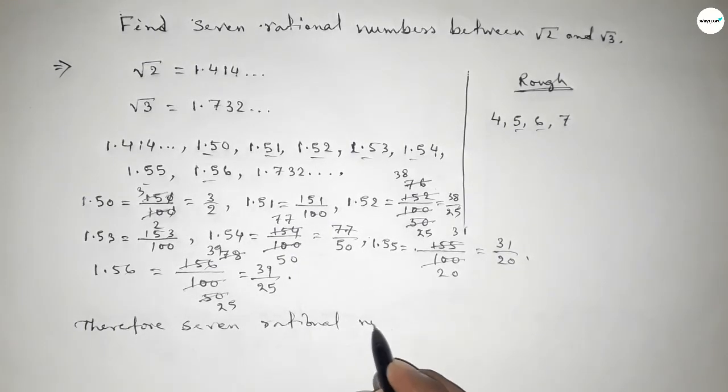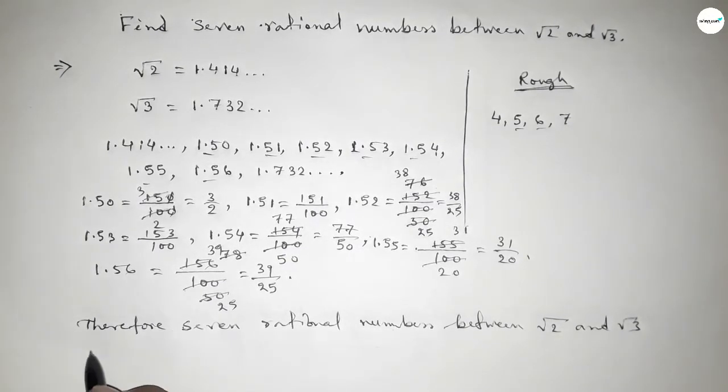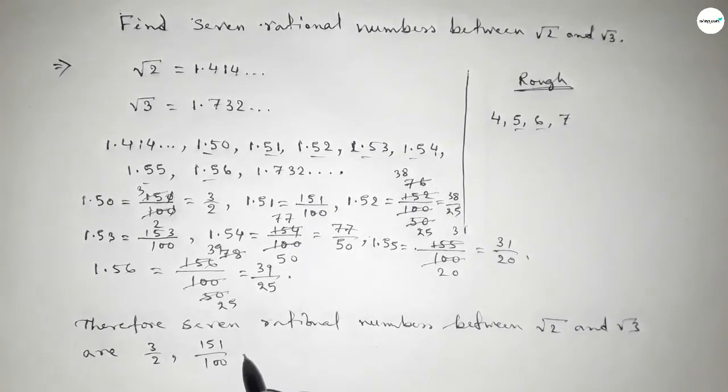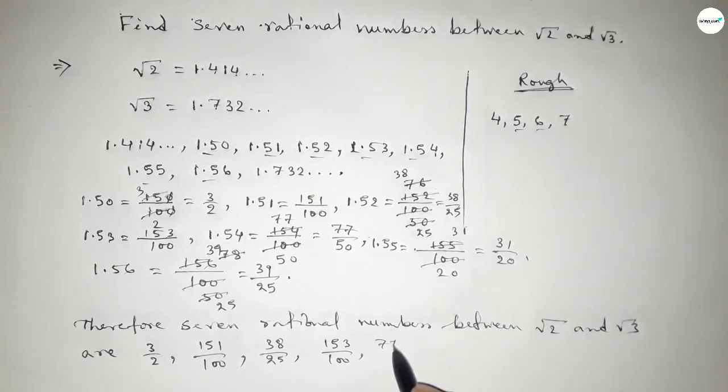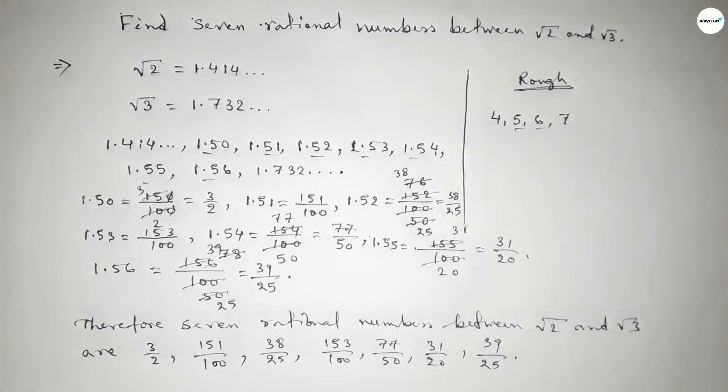The seven rational numbers between √2 and √3 are: first one is 3 over 2, second 151 over 100, third 38 over 25, fourth 153 over 100, fifth 77 over 50, and last one 39 over 25. So this is the process to find out seven rational numbers between √2 and √3. That's all, thanks for watching.